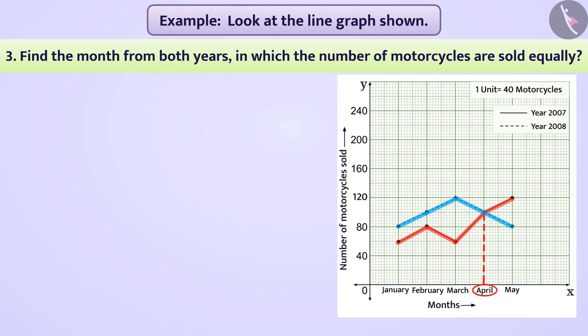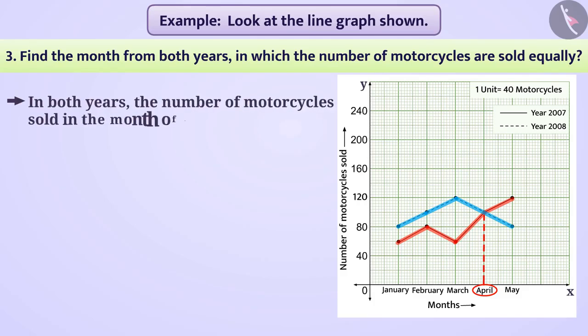This tells us that in both years, the number of motorcycles sold in the month of April is equal. Let's see the next example.